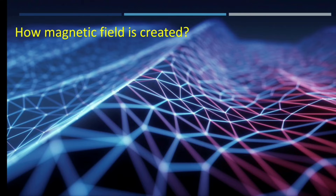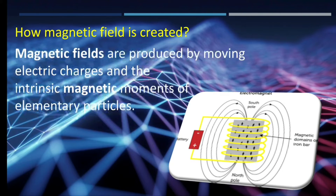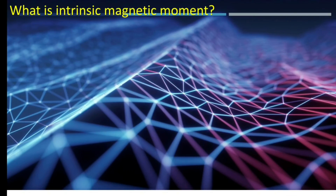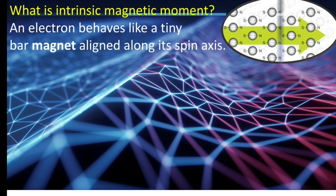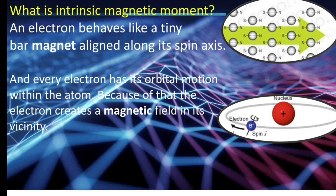How is magnetic field created? Magnetic fields are produced by moving electric charges and the intrinsic magnetic moment of elementary particles. An electron behaves like a tiny bar magnet aligned along its spin axis. Inside a magnetic material, every electron behaves like a tiny magnet, and every electron has its orbital motion within the atom — because of that, electrons create a magnetic field in their vicinity.